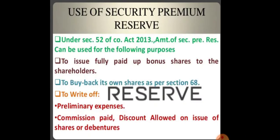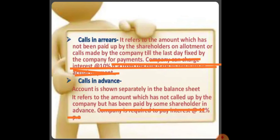The uses of the security premium reserve are very important. Under Section 52 of the Companies Act 2013, the security premium reserve can be used for: issuing fully paid up bonus shares to shareholders; buying back shares as per Section 68; writing off preliminary expenses; and paying commission or discount allowed on the issue of shares or debentures. Preliminary expenses are the costs incurred at the time of starting the company, such as documentation costs.